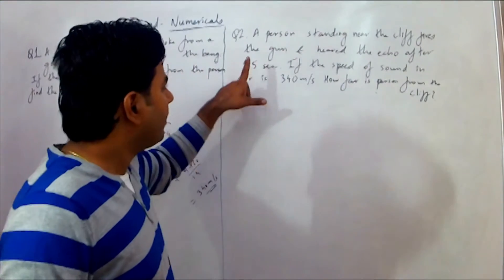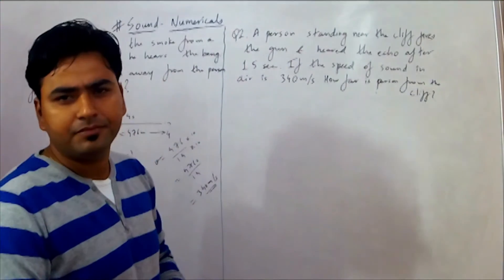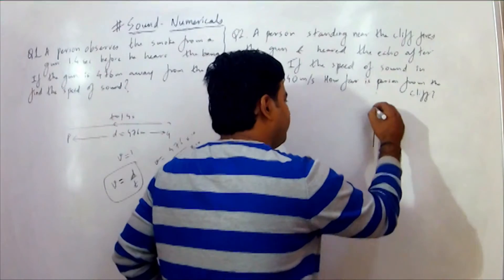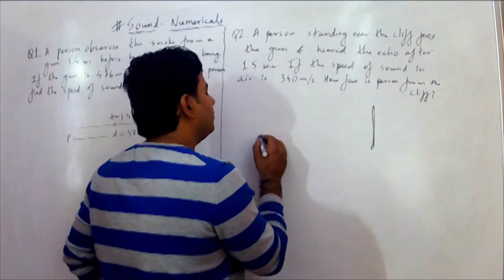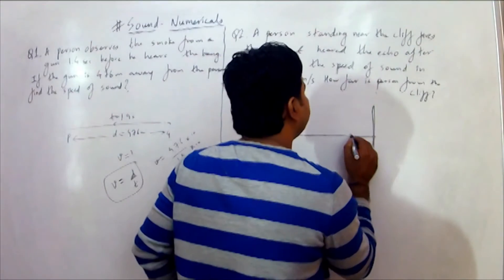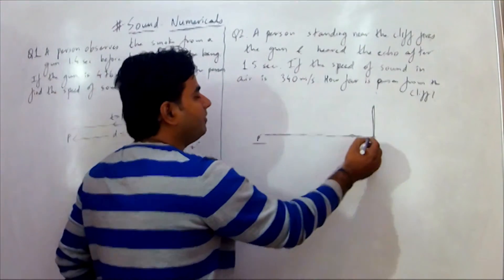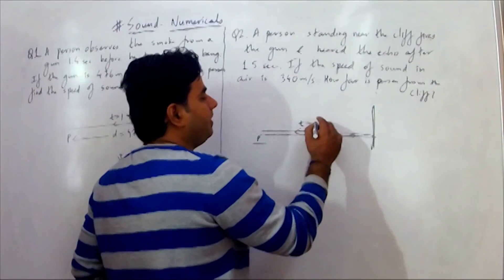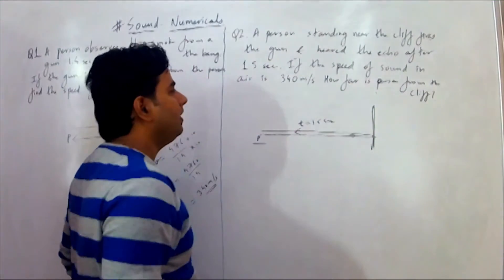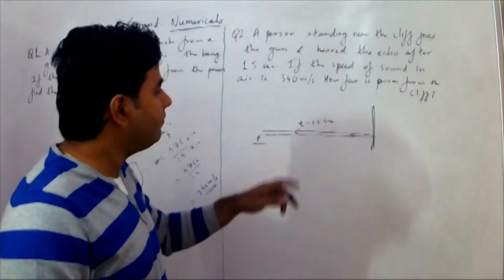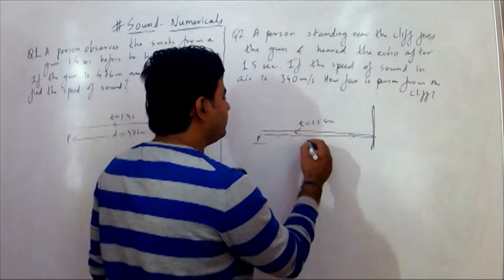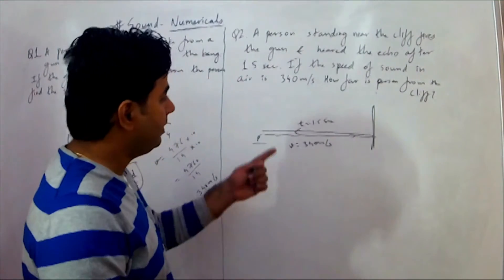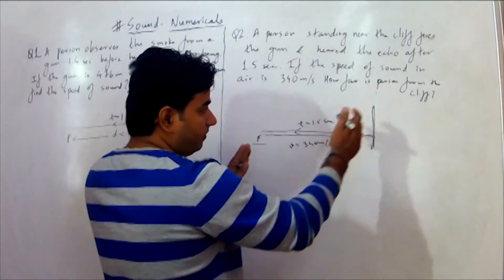Let's see the second problem. A person standing near a cliff fires a gun. The echo from the cliff is heard 1.5 seconds later. The speed of sound in air is 340 metres per second. We have to calculate the distance between the person and the cliff.